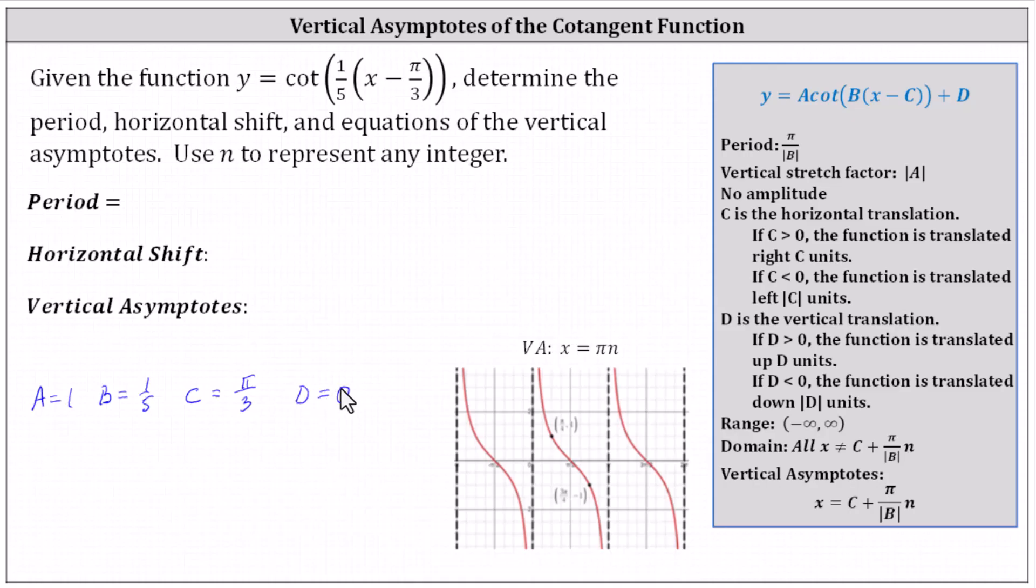Recall the period for the basic cotangent function is pi radians, not two pi radians, which is why the formula for the period is pi divided by the absolute value of b. Which, in our case, gives us pi divided by one fifth.